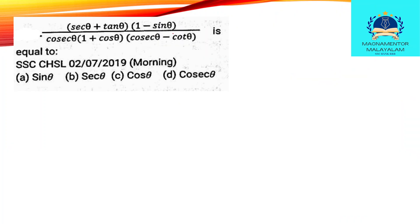Then, sec theta plus tan theta, into 1 minus sin theta, divided by cos theta into cos theta — is equal to what? Now, sec theta is 1 by cos, tan theta is sin by cos. So we get 1 plus sin divided by cos total.